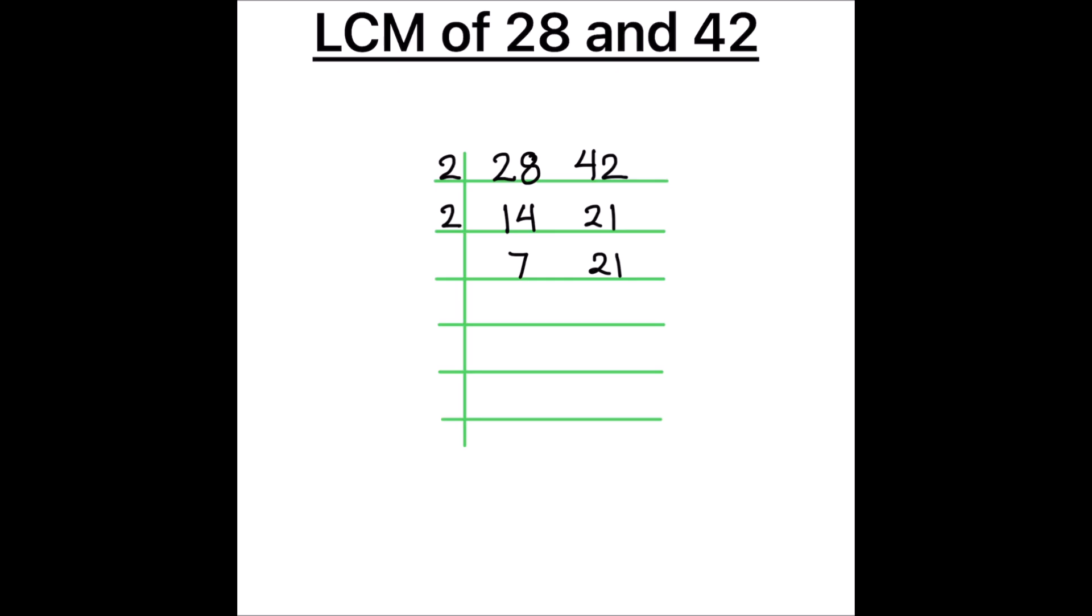Now 7 and 21 both have a common factor of 7. So 7 times 1 is 7 and 7 times 3 is 21. Now 3 is a prime number it is only divisible by number 3. 3 times 1 is 3. So both the numbers are fully divided.